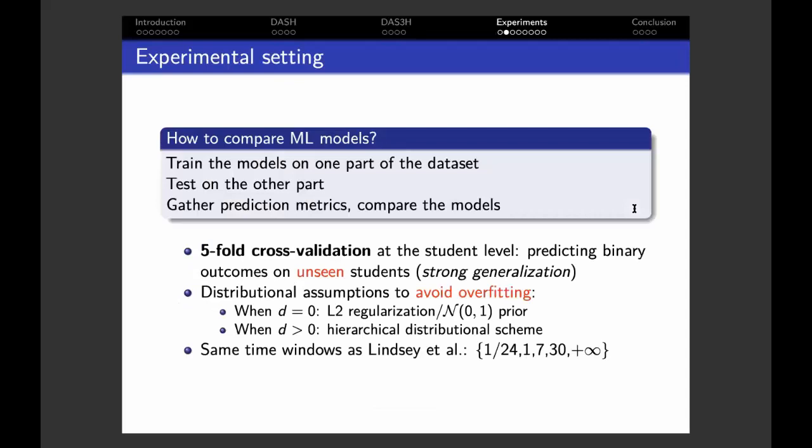First, I'll start with a quick refresher on machine learning model comparison since some of you may not be familiar with such methods. The idea is to first train the models and estimate their parameters on one part of the dataset, which we call the training part. Then test the model and make predictions on the other part, which was held out of the dataset. And finally, we gather prediction metrics on each of these testing datasets and compare the models based on these results. In our experiments, we used five-fold cross-validation at the student level, meaning that we split the student population into five disjoint groups and made the models predict on completely unseen students. We also used distributional assumptions on the model features to help model training and avoid overfitting. We finally used the same time windows as Lindsay et al. with their original DASH model: one hour, one day, seven days, thirty days, and plus infinity.